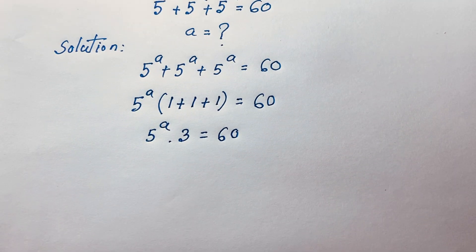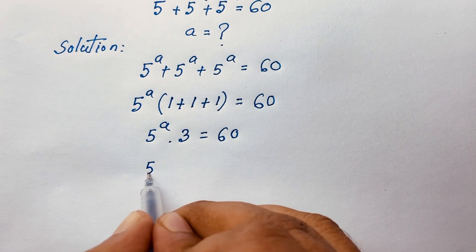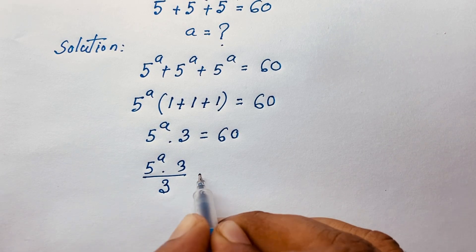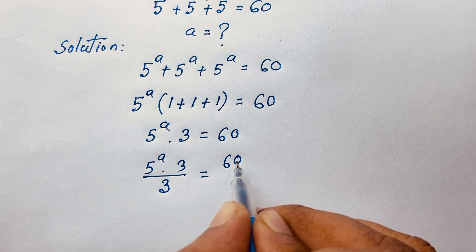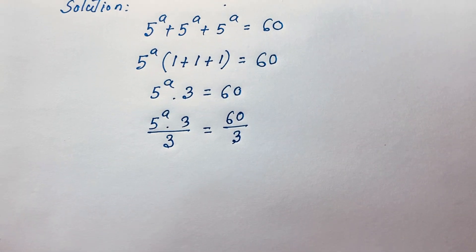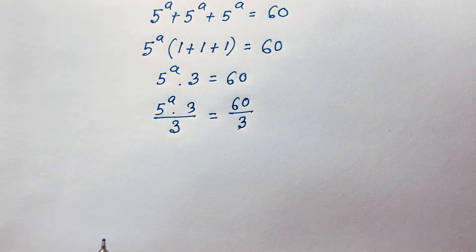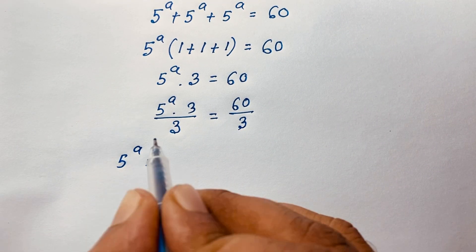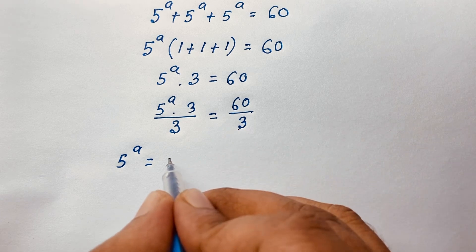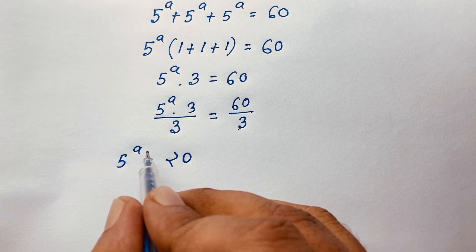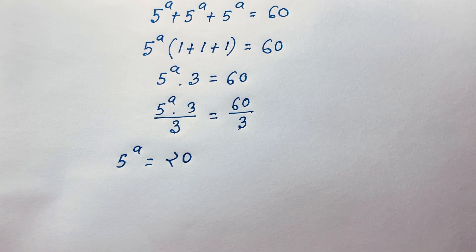If I divide both sides by 3, I get 5 to the power A times 3 over 3 is equal to 60 divided by 3. The 3s cancel out, and 60 divided by 3 is 20. So we find that 5 to the power A is equal to 20.